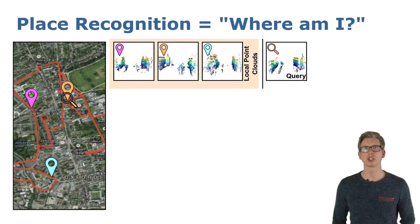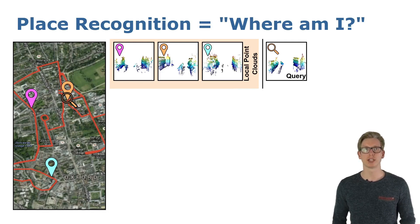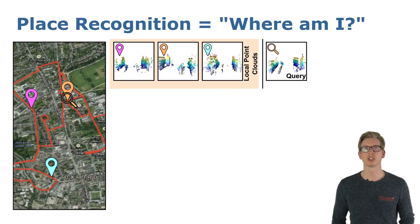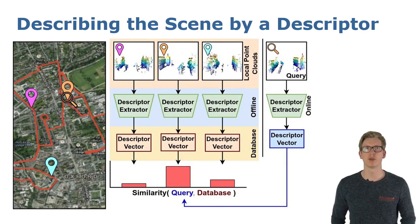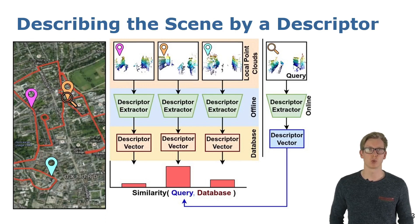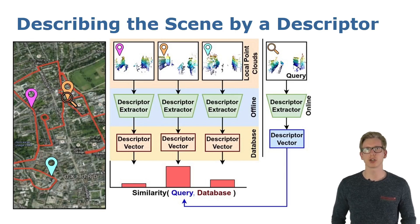For solving the task, one tries to compare the observations of your local surrounding with a given previously recorded map. This map works as our database, which we want to query by our current observations. The database as well as the query consists of local point clouds. What we want to compute is a similarity between the query point cloud and the entries in our database. Our current location is then hopefully the position of the most similar entry.